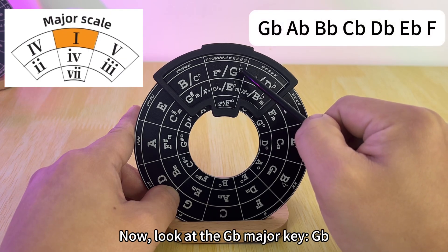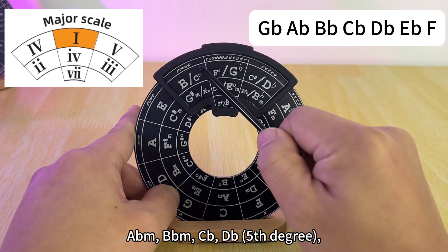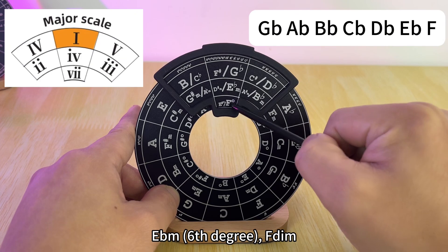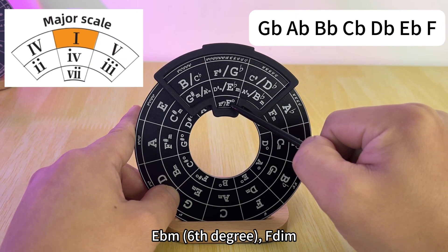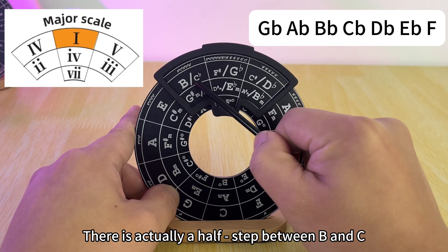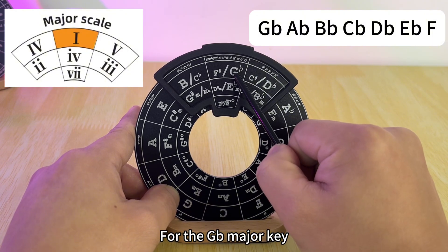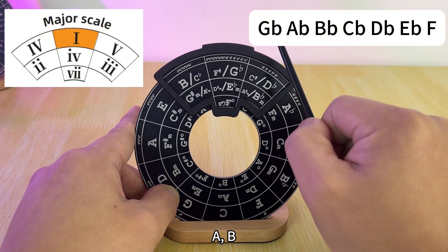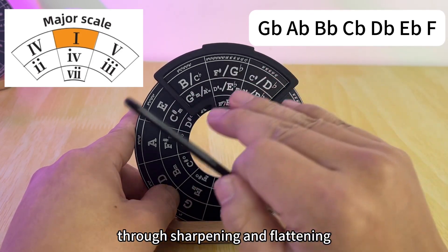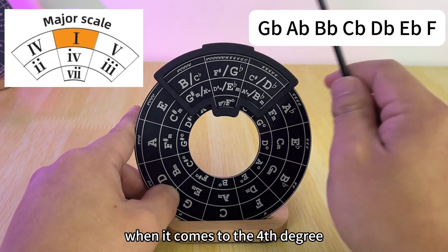Now look at the G flat major key: G♭, A♭m, B♭m, C♭, D♭ fifth degree, E♭m sixth degree, F diminished. At this point there is also a half step change. There is actually a half step between B and C, and C flat is actually the note B. For the G flat major key, it definitely includes the notes G, A, B, C, D, E, F, then through sharpening and flattening we change them into the whole-whole-half-whole-whole-whole-half relationship. So when it comes to the fourth degree, we use the note C flat.